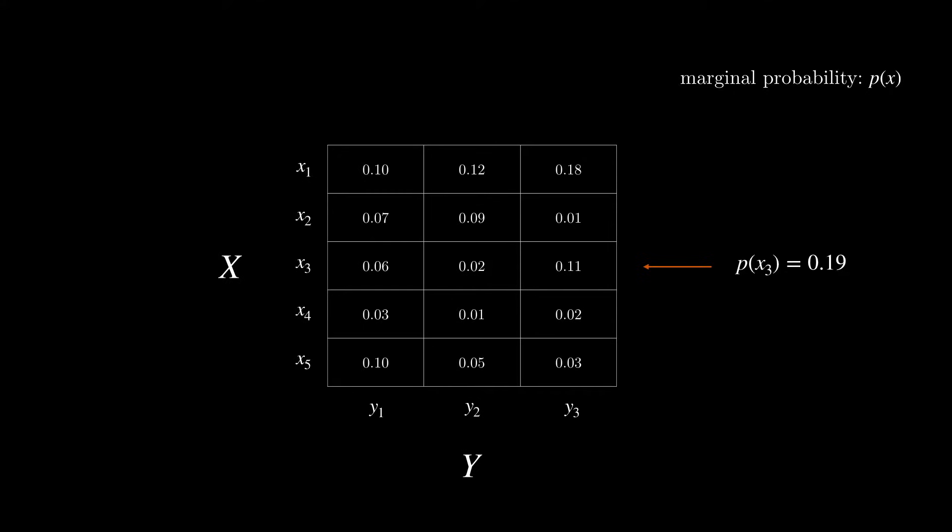You've also likely encountered conditional probability before, where we explicitly set the values of certain random variables and then consider the distribution of some remaining ones. So, say here we want to know the conditional probability of y given x.